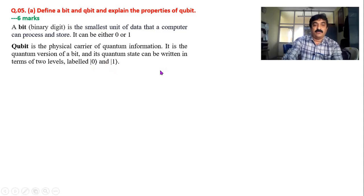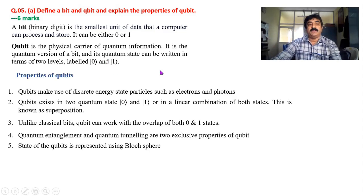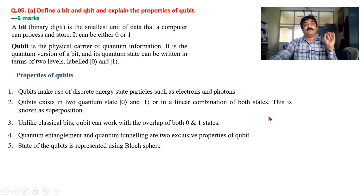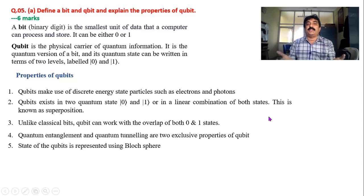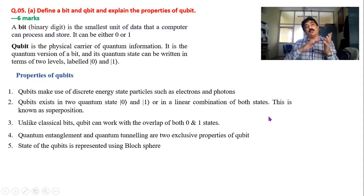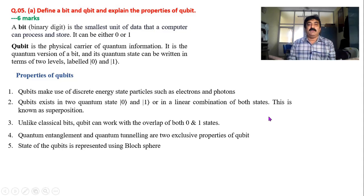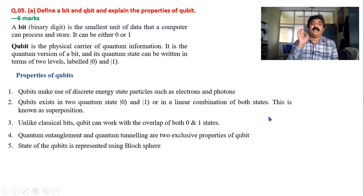Coming to the properties of qubit: qubit makes use of discrete energy state particles such as electrons and photons. That means we are using electrons or photons for storing data. We can use the spin of an electron, energy level of the electron, or orientation of the electron. Similarly for photons — we store data at the particle level.